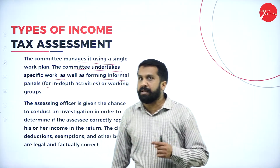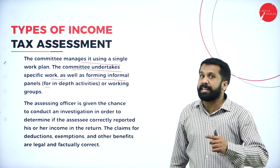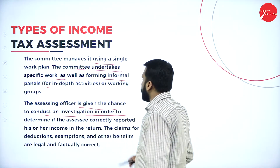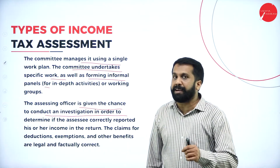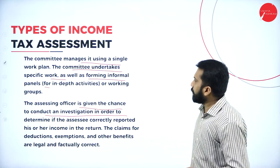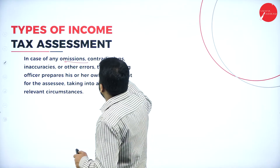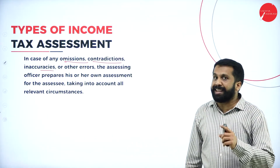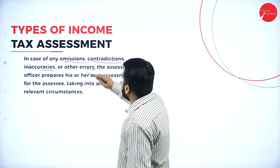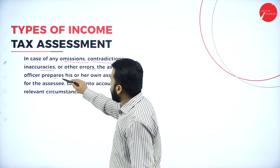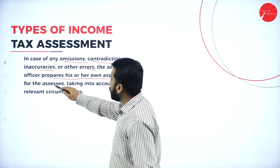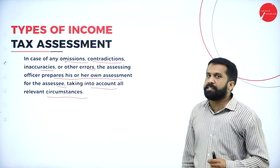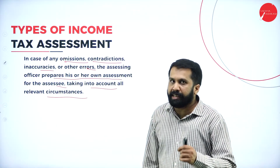In scrutiny, an assessing officer is assigned who will come and investigate. They will check everything. In case of any omission, contradiction, or inaccuracy — if you have made any mistakes or errors — the assessing officer may prepare their own assessment of the assessee taking into account all relevant circumstances. You will then be required to pay penalties and fines for any wrong assessment.